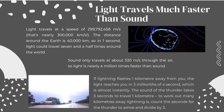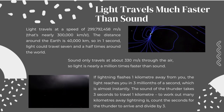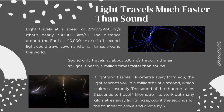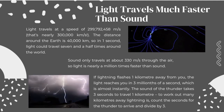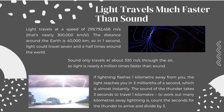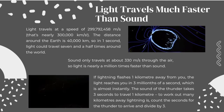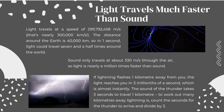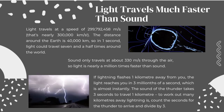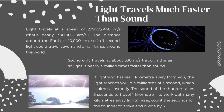Light travels much faster than sound. Light travels at a speed of 299,792,458 meters per second — that's nearly 300,000 kilometers per second. The distance around the Earth is 40,000 kilometers, so in one second, light could travel seven and a half times around the world. Sound only travels at about 330 meters per second through the air, so light is nearly a million times faster than sound.